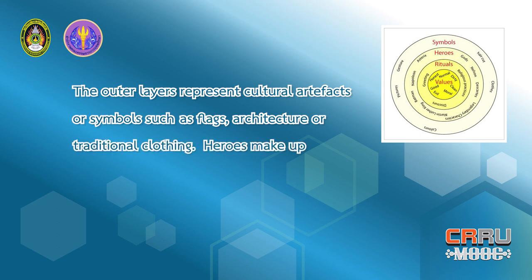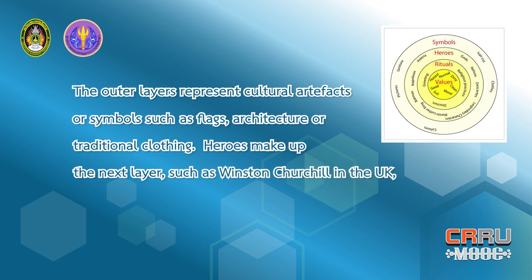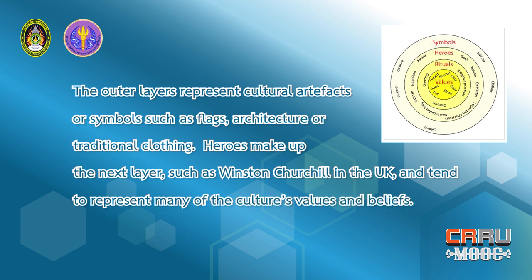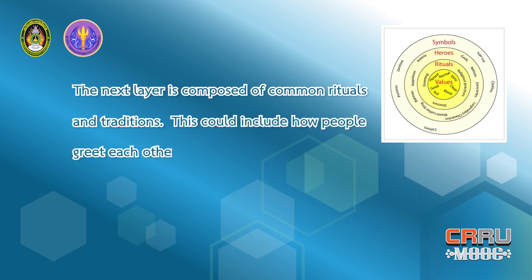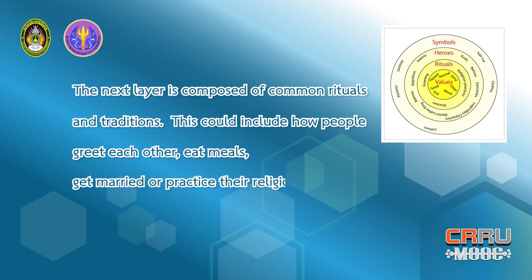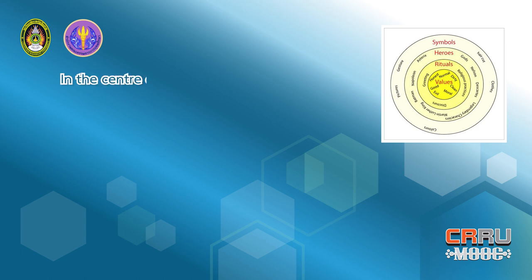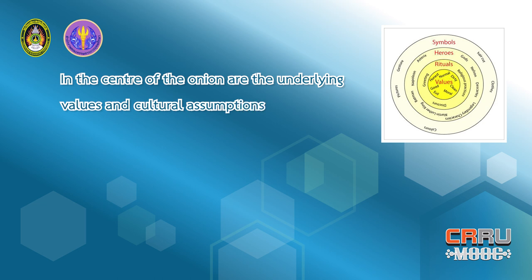Heroes make up the next layer, such as Winston Churchill in the UK, and tend to represent many of the culture's values and beliefs. The next layer is composed of common rituals and traditions. This could include how people greet each other, eat meals, get married, or practice their religion.